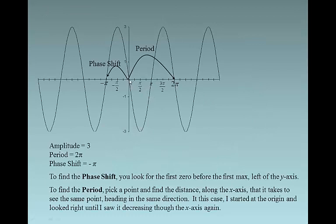To find the phase shift, look for the first zero before the first max, left of the y-axis. The curve normally goes up through the origin, so I looked left until I saw it going up through the x-axis, and that distance gave me the phase shift of negative π. The phase shift will always be negative so that we can have a positive value for C. For the period, I saw where the curve was heading down through the origin, followed the graph until it was heading down again, and that distance is 2π. To find the period: pick a point and find the distance along the x-axis until you see the same point heading in the same direction.